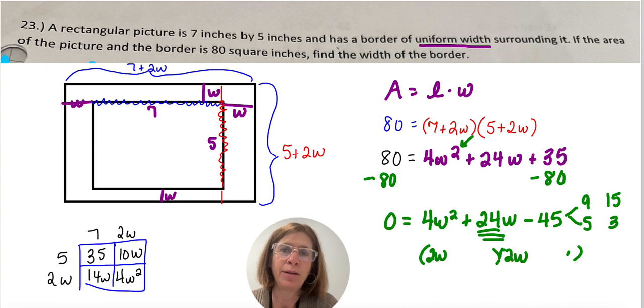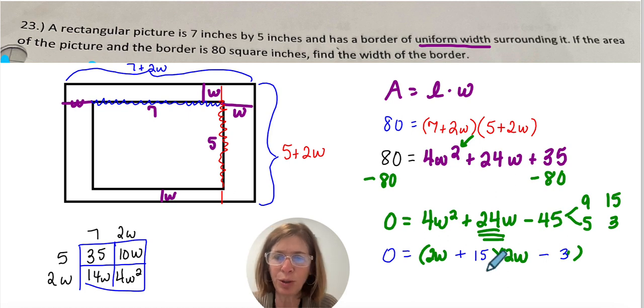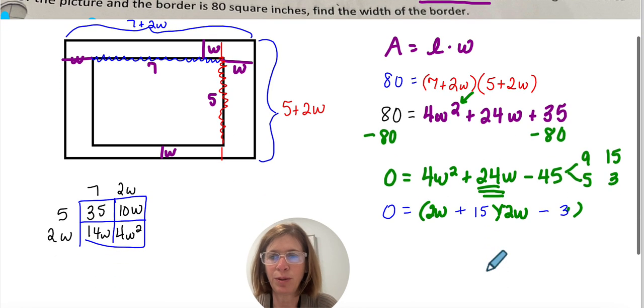And just mental math here, I'm thinking that it's probably going to be 15 and 3, because if I put 15 here and 3 here, my outer term is going to give me 6, and my inner term is going to give me 30. And 6 and 30, I can get to be 24. So I need them to be a positive 24 and a negative 6. So I think that that works out well. 2W plus 15 and 2W minus 3.